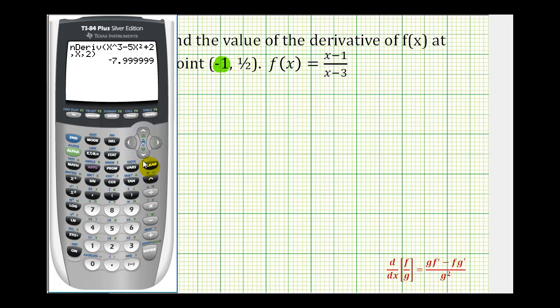So from the home screen, we're going to press math, option 8, enter. Type in our function, we need to be careful here. We want parentheses around the numerator and denominator. So we have an open parenthesis, x minus 1, close parenthesis, divided by open parenthesis, x minus 3, comma x, comma, the x value is negative 1.